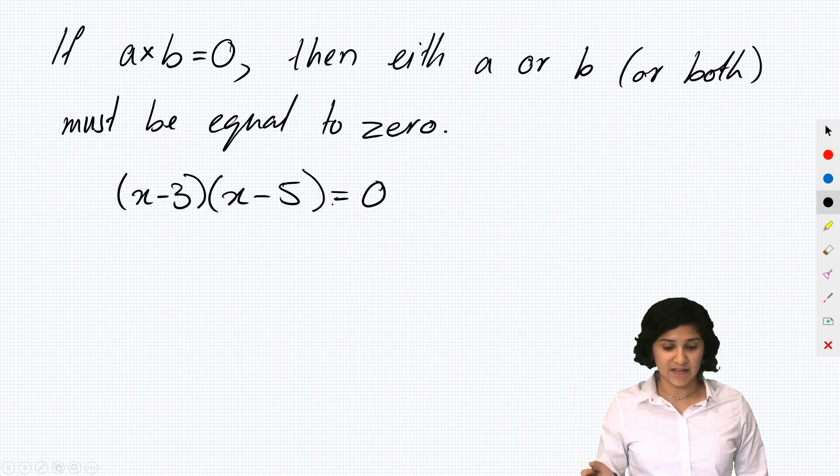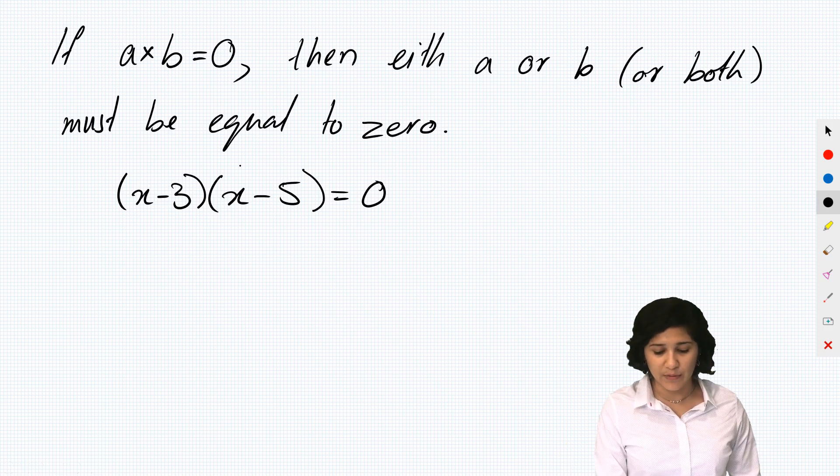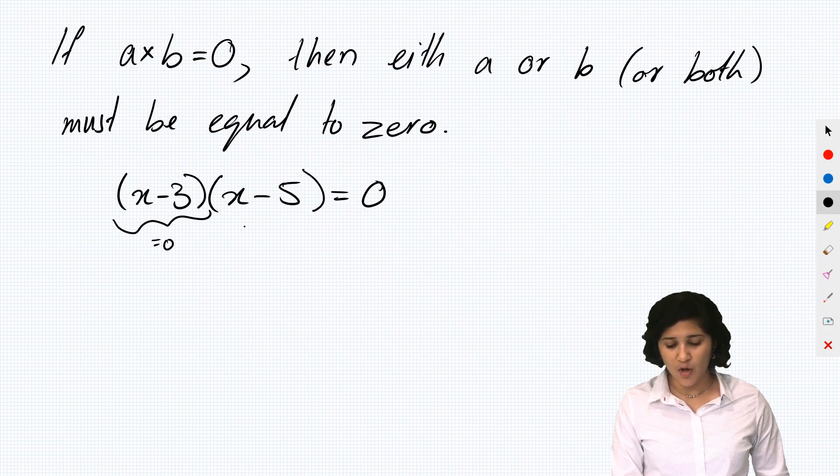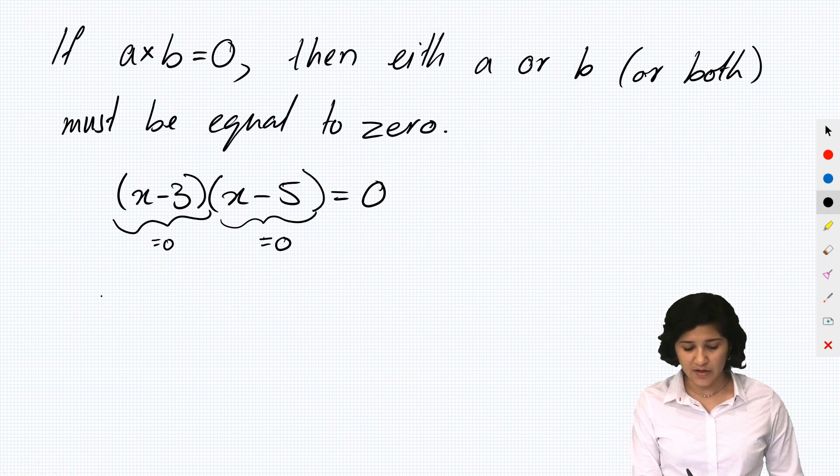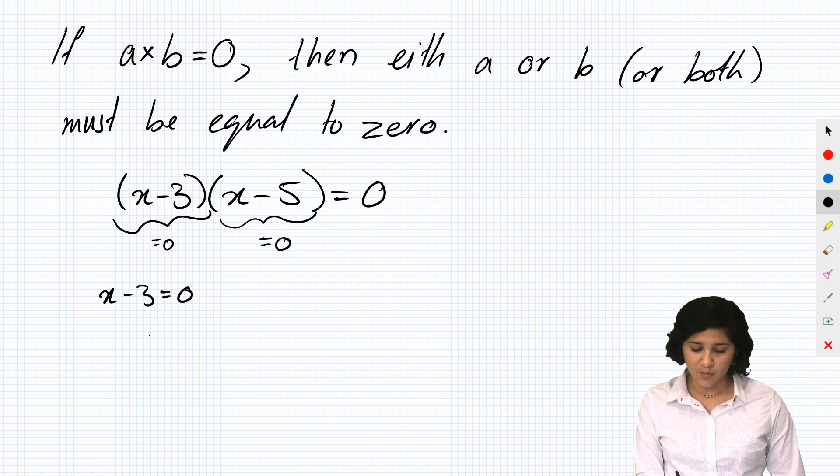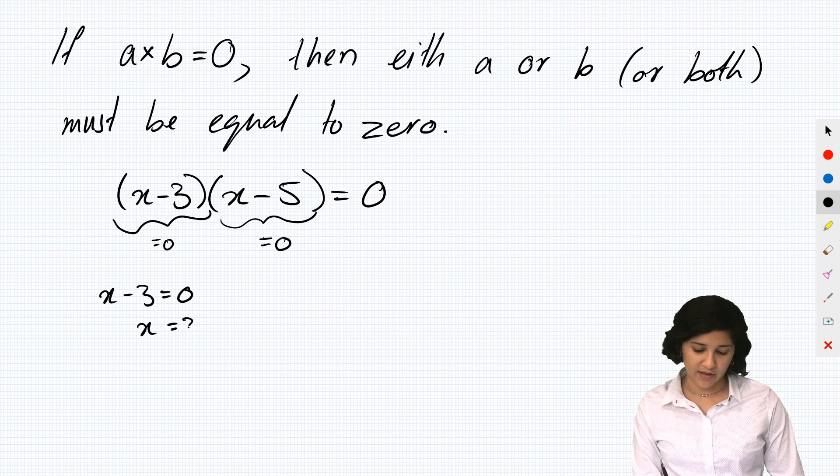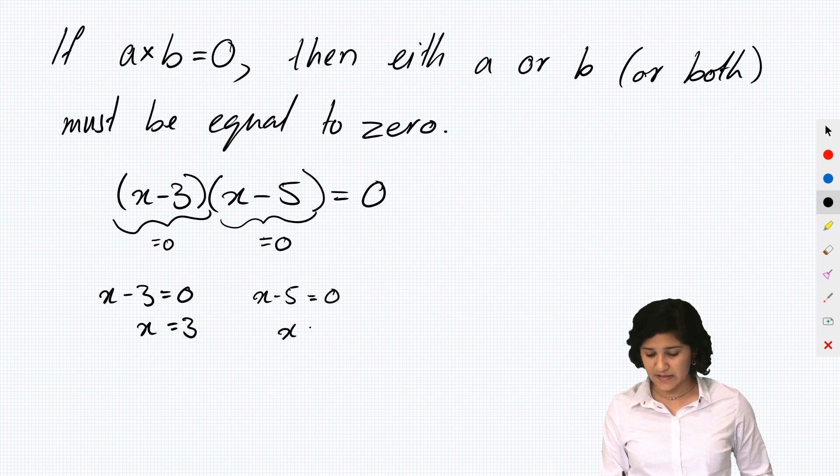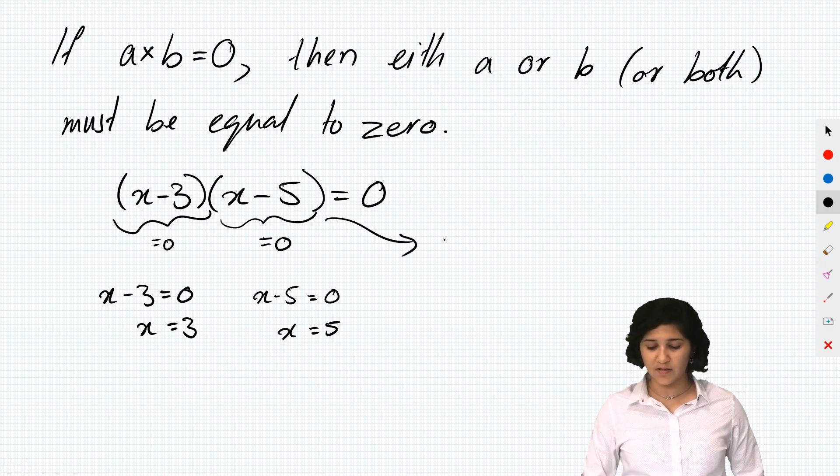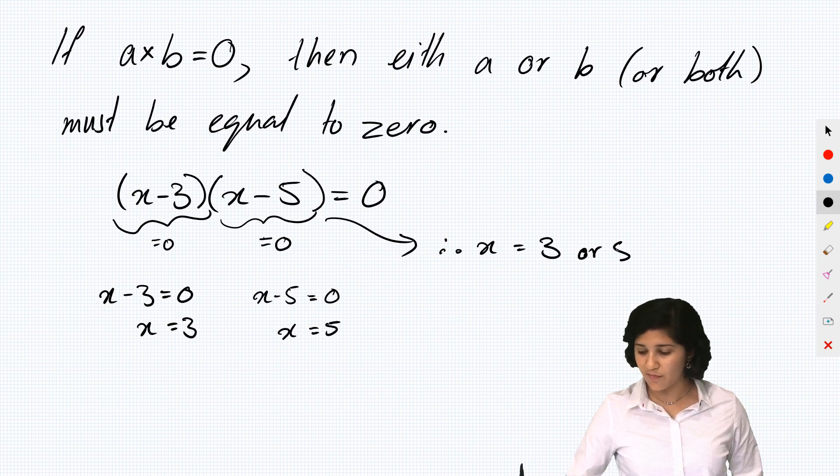Even though I don't know what x is, I know that if these two bits multiply to give zero, either this part equals zero or this part equals zero. So if x minus 3 equals zero, that means that x must equal 3. And if x minus 5 equals zero, that means that x must equal 5. So we can solve this equation saying, therefore, x equals 3 or 5.